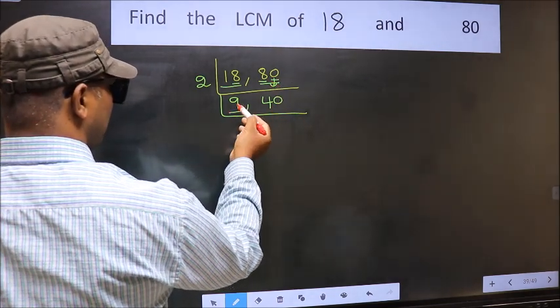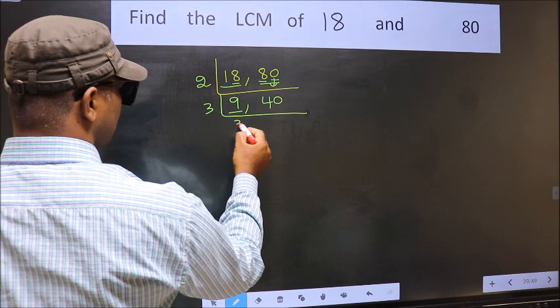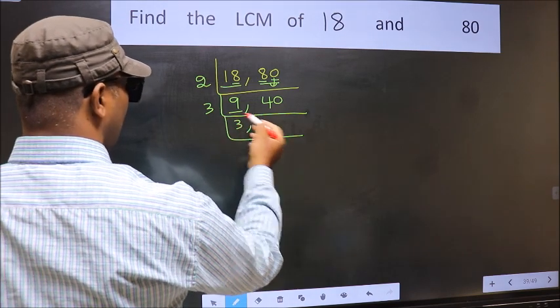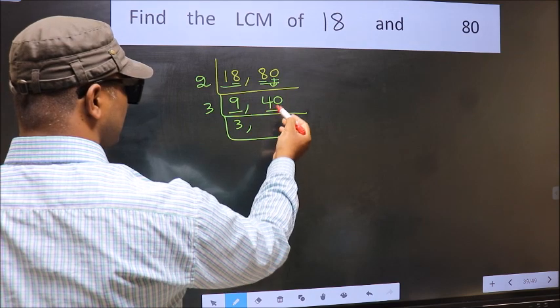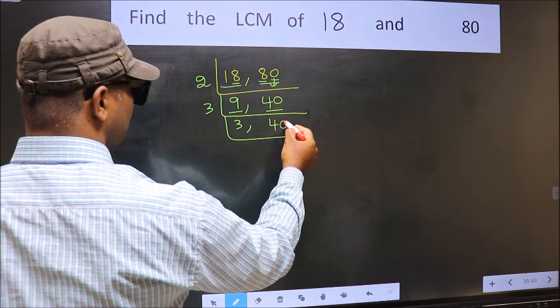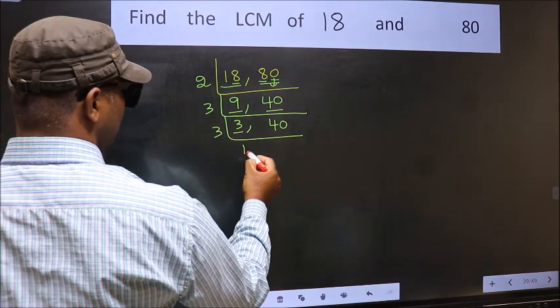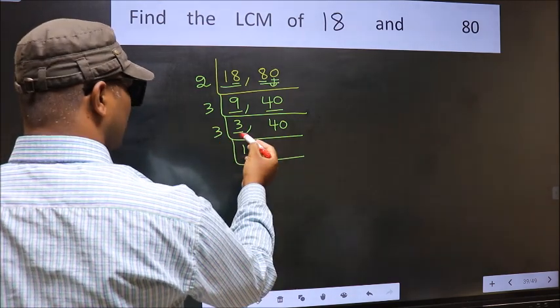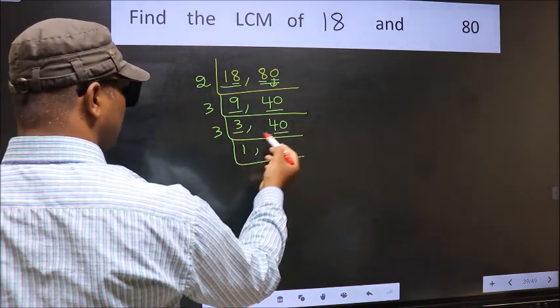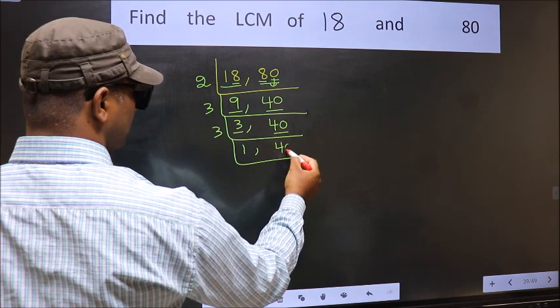Now here we have 9. 9 is 3 times 3 is 9. The other number 40 not divisible by 3 so we write it down as it is. Now here we have 3. 3 is a prime number so 3 times 1 is 3. The other number 40 not divisible by 3 so we write it down as it is.